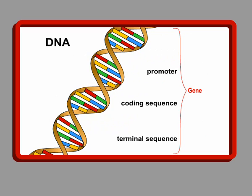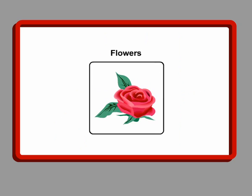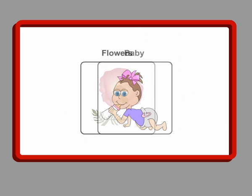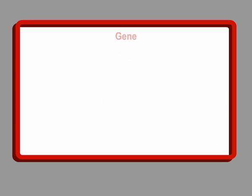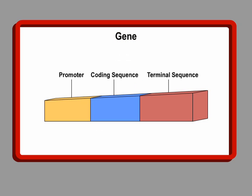DNA contains genes. A gene is a functional and physical unit of heredity passed from parent to offspring. It determines, for example, the color of a plant's flowers, or a baby's eyes or hair. Genes contain the information for making a specific product, usually a protein. A gene is made up of a promoter, a coding sequence, and a terminal sequence.